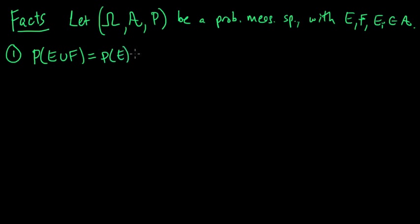Fact one: the probability of E union F equals the probability of E plus the probability of F, if E intersect F is the empty set.